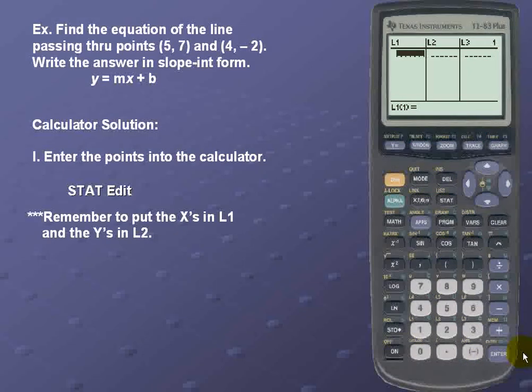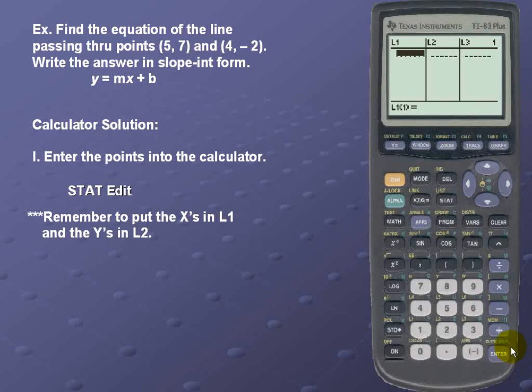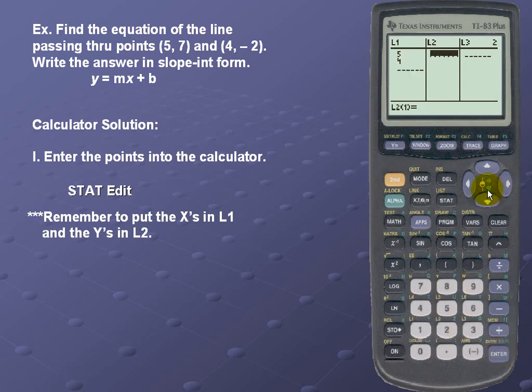Remember to put the x's in List 1 and the y values in List 2. So in our List 1, we'll place 5 and 4. And in List 2, we'll put the corresponding y values, 7 and -2.